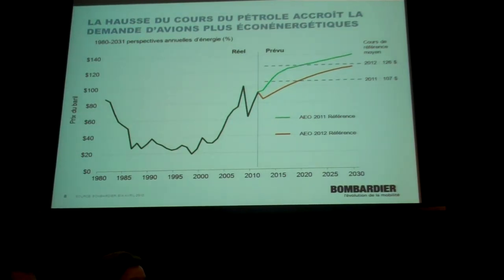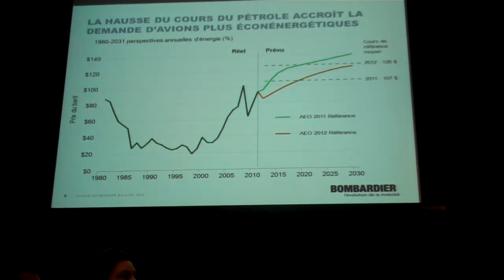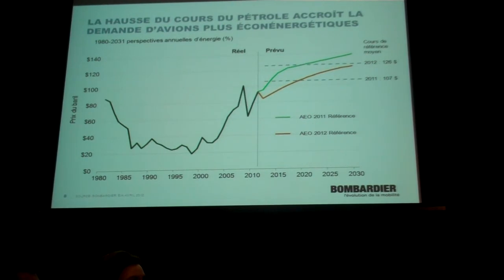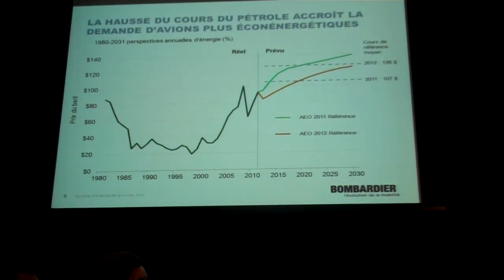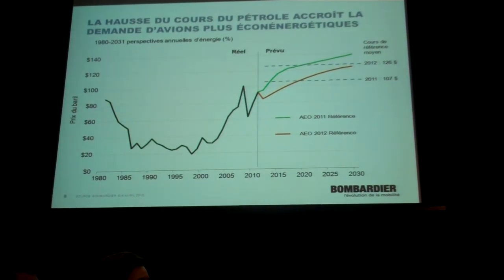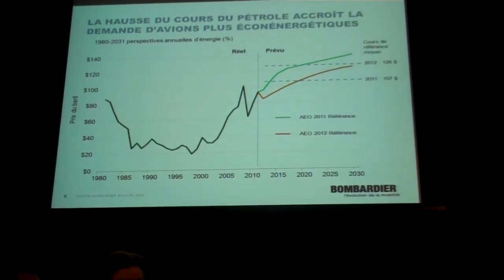One of our other significant factors in our model is oil price — yet another indicator that has moved quite significantly. In the last number of years, we have not seen large movements in our forecast of oil price over a 20-year period. However, this year for the 2012 forecast, we actually have an increase from an average of $107 per barrel to $126 — an 18 percent jump. That has had quite a significant impact primarily on our commercial aircraft forecast, as oil price is a major driver of airline profitability, and any movement in oil price tends to impact our commercial aircraft forecast more significantly.